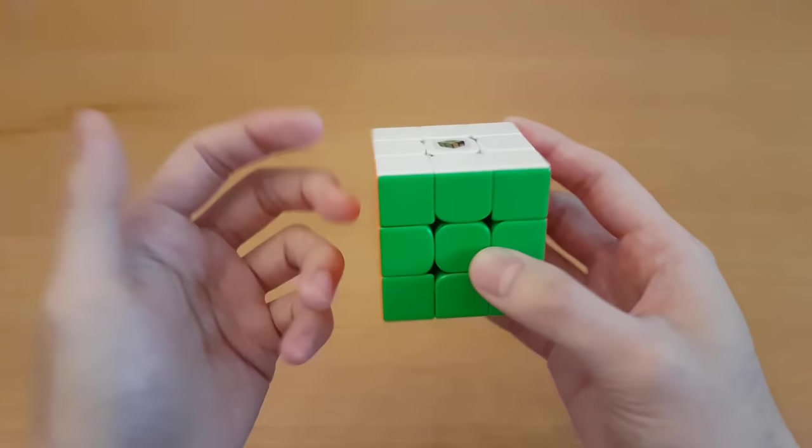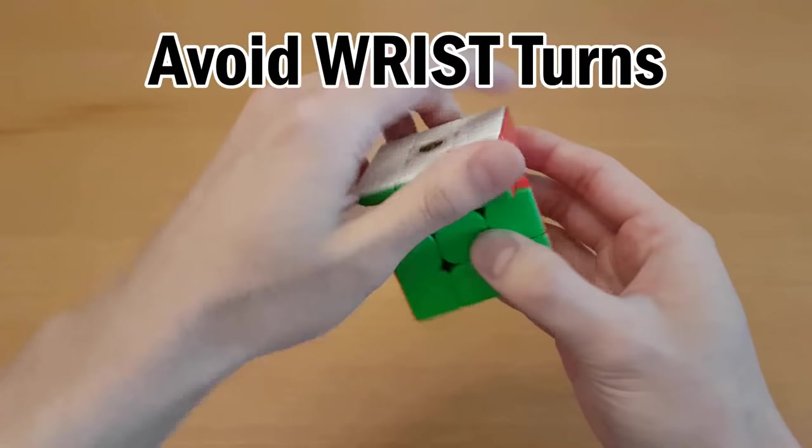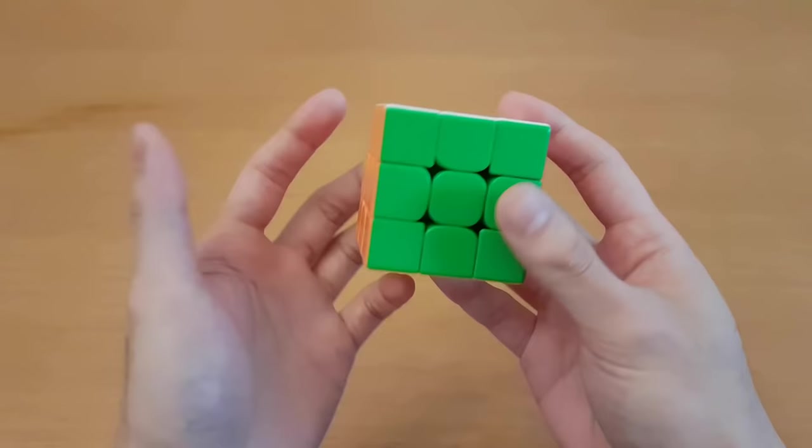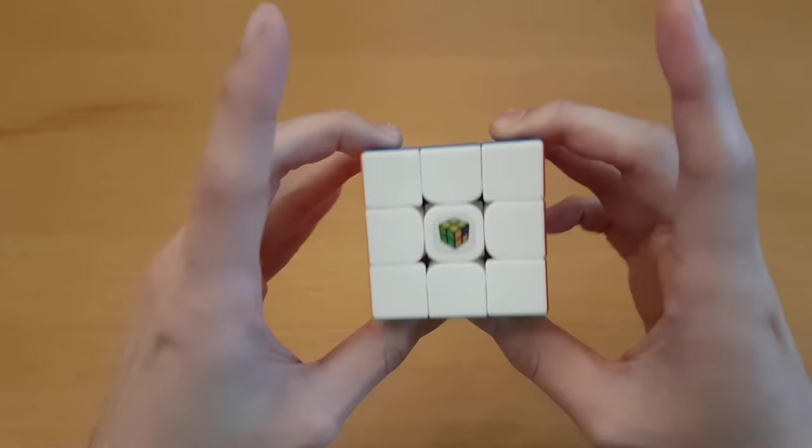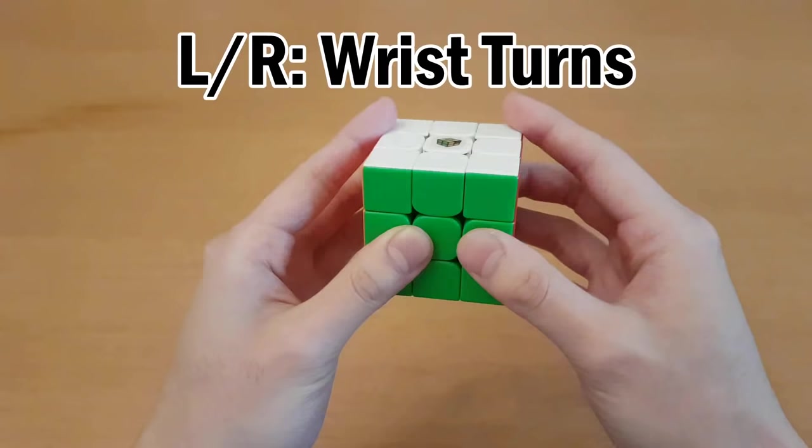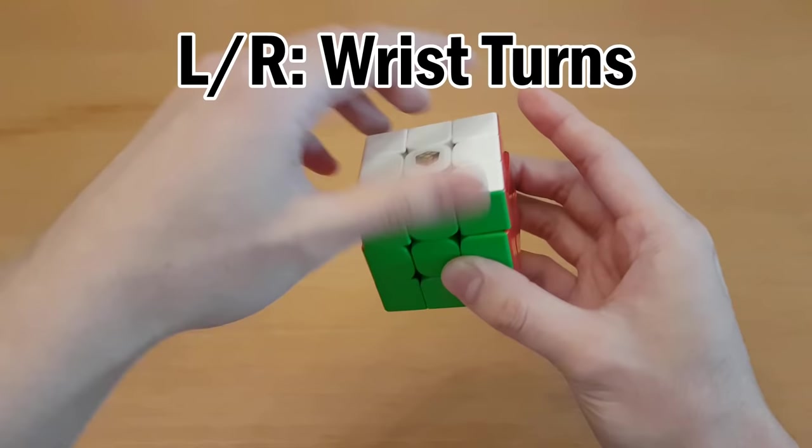Number two, proper turning technique and finger tricks. You want to turn the cube fast, so you have to avoid wrist turns like this. The best way to hold the cube is with thumbs on front and middle and ring finger on the back. We're still going to use wrist turns, but only for the right side and the left side.